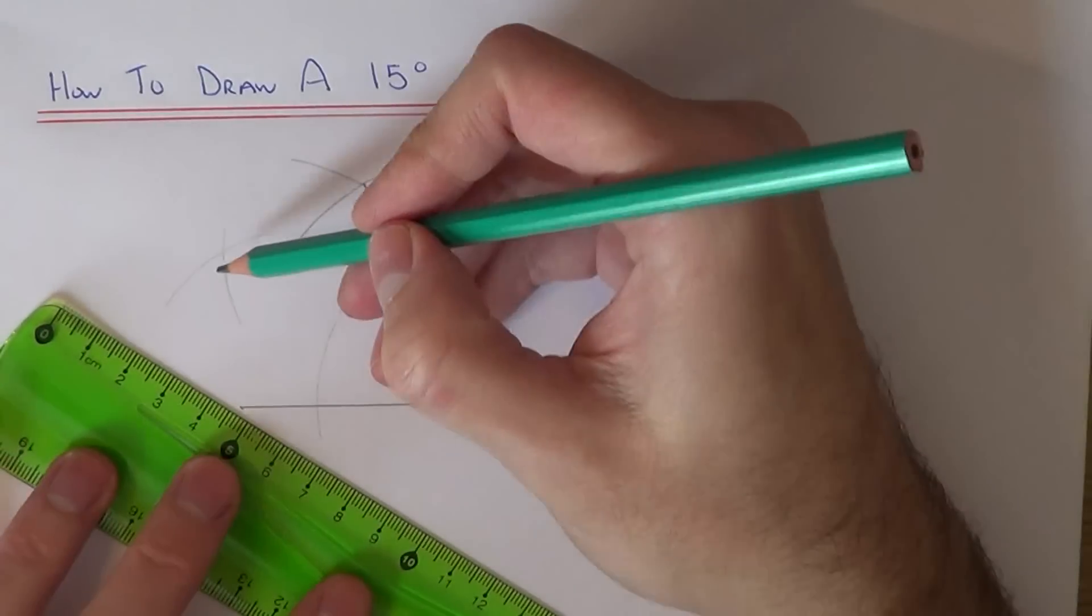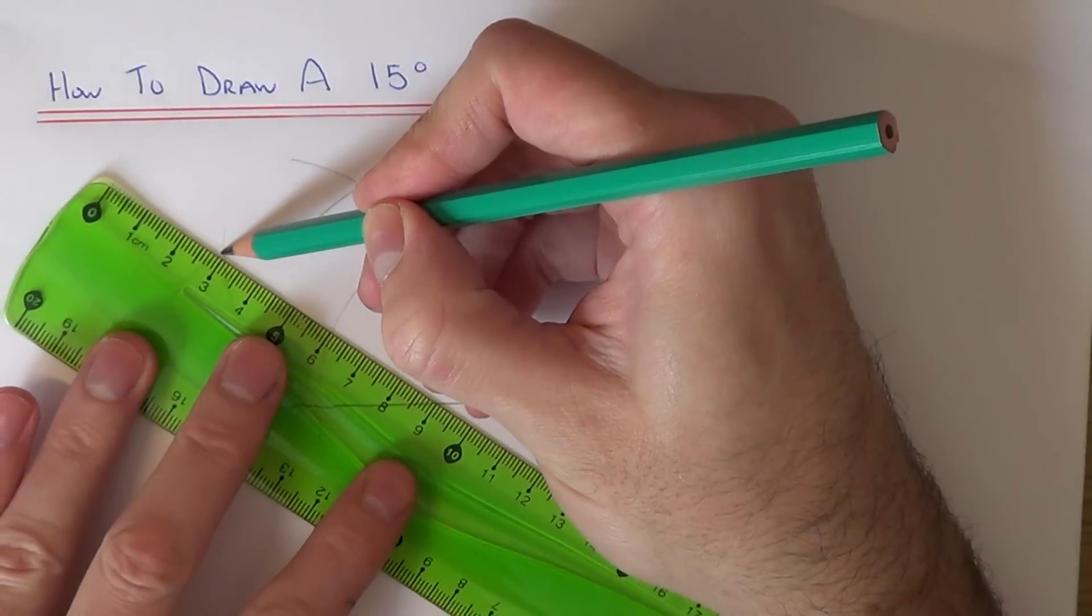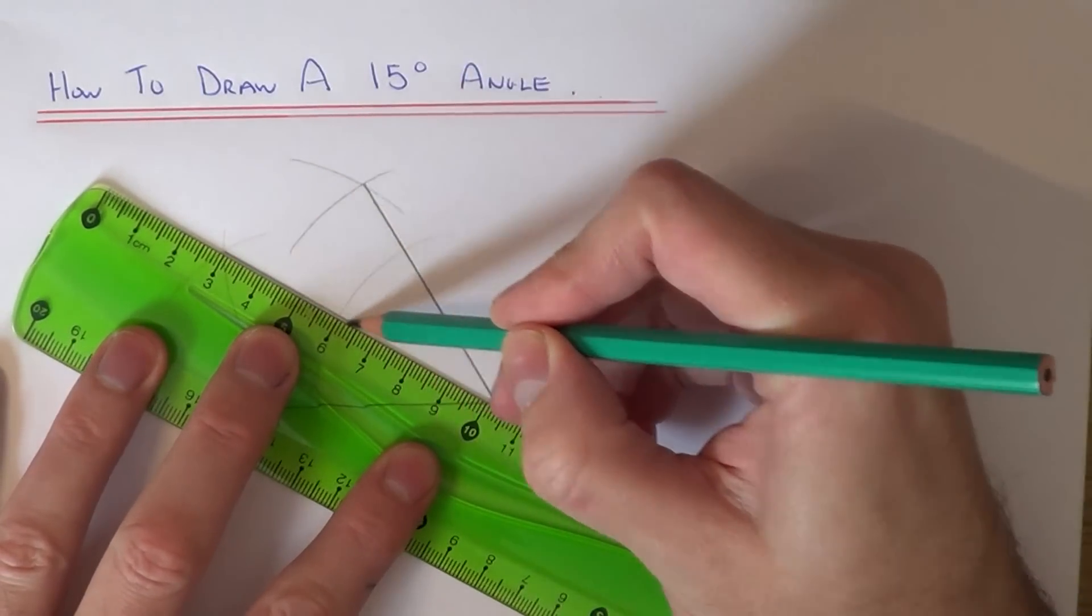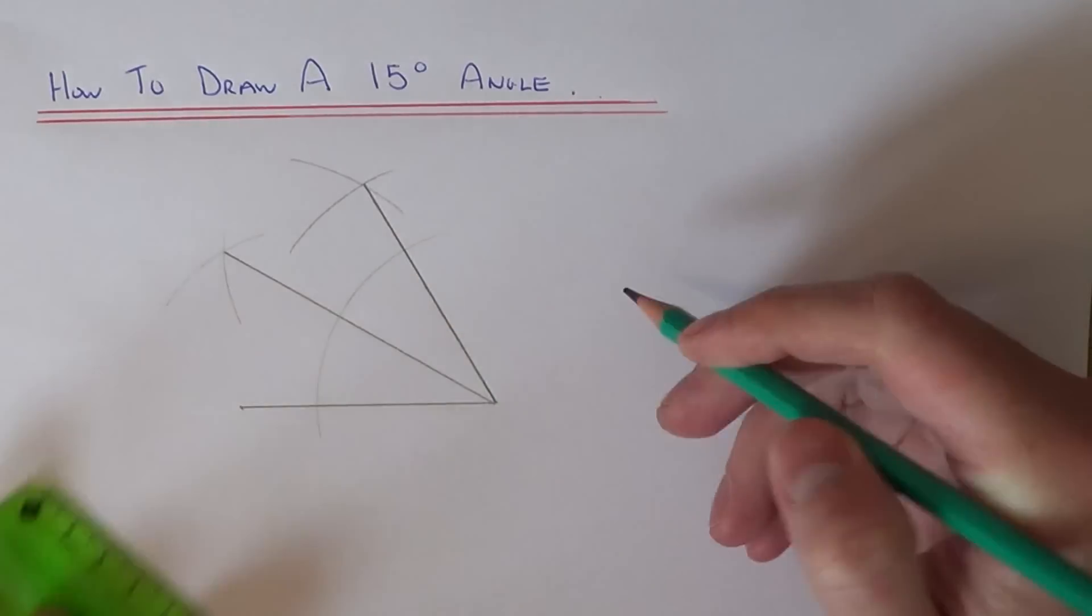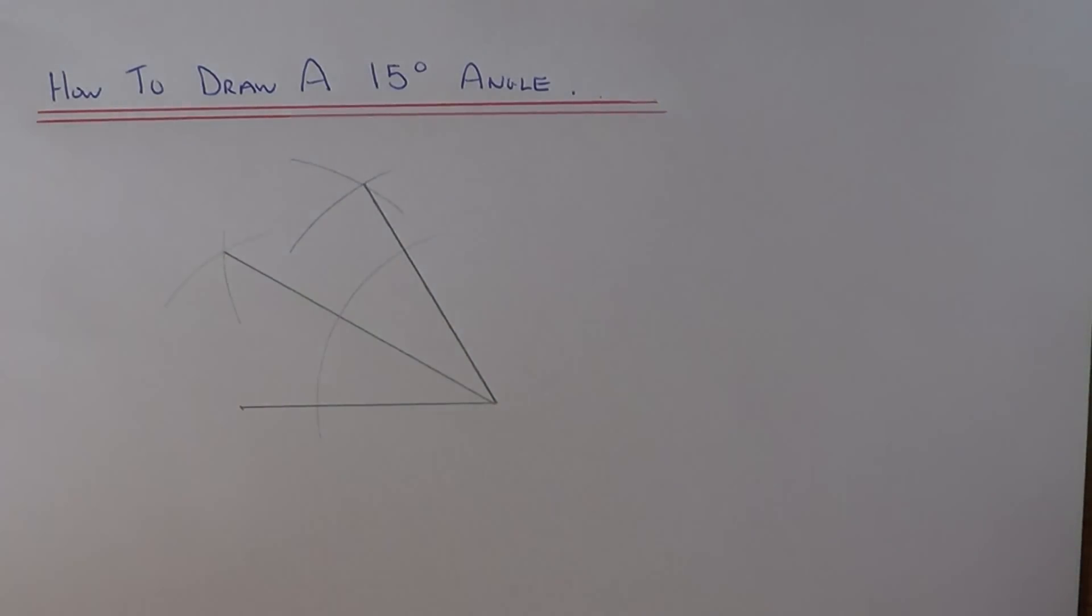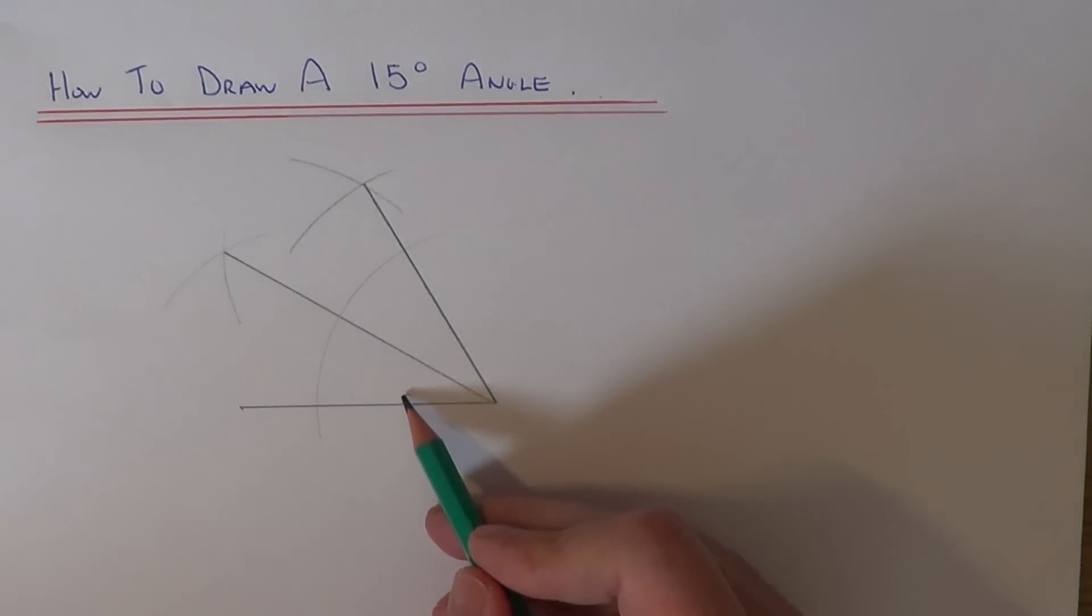Now draw a line going from this intersection point back to the end of the line. This angle here that we've made would be 30 degrees.